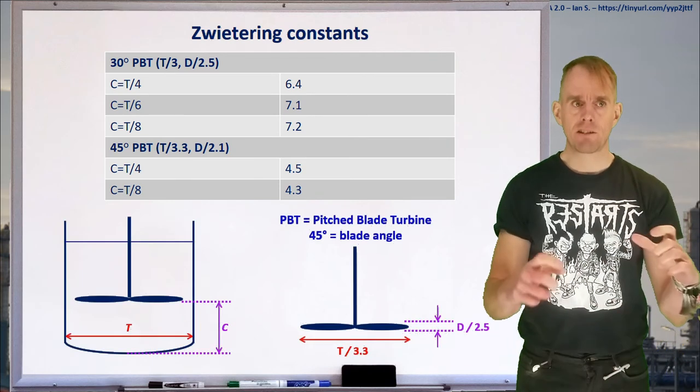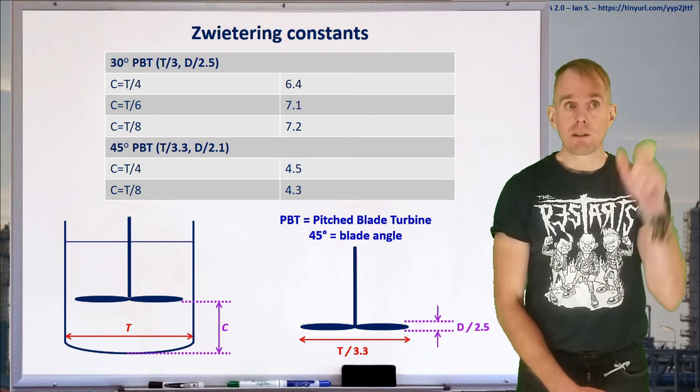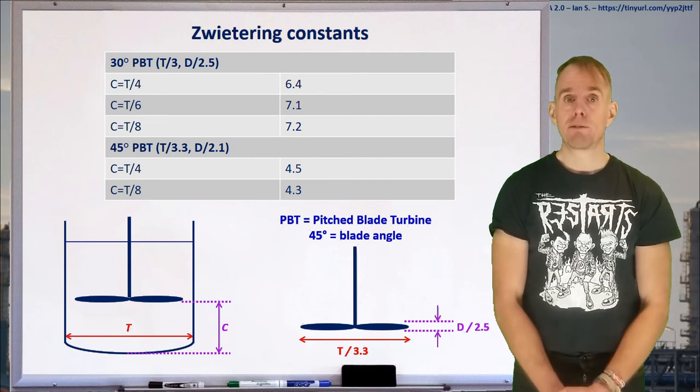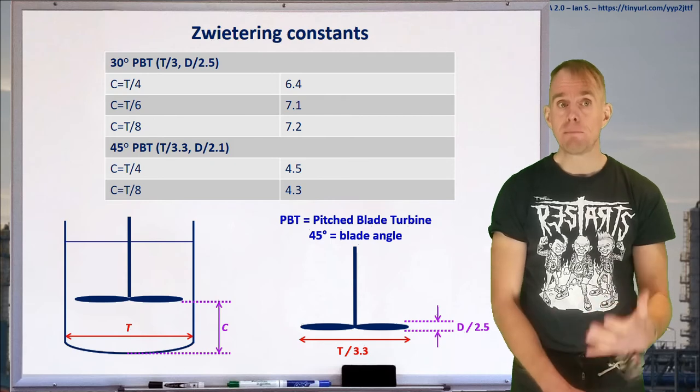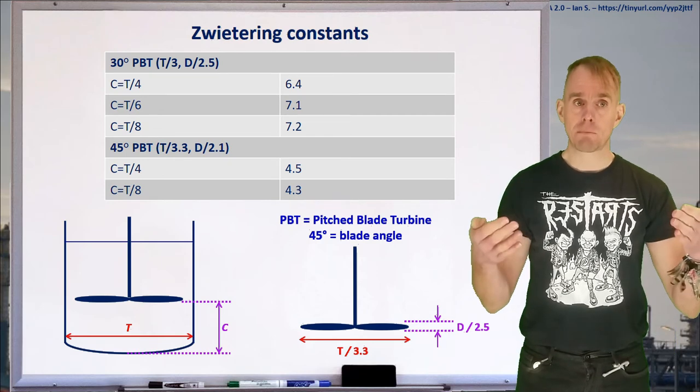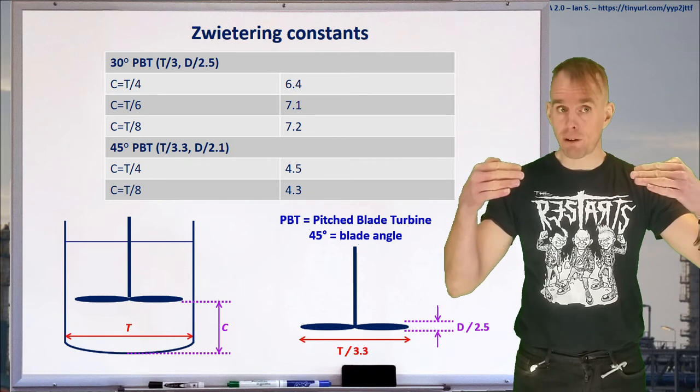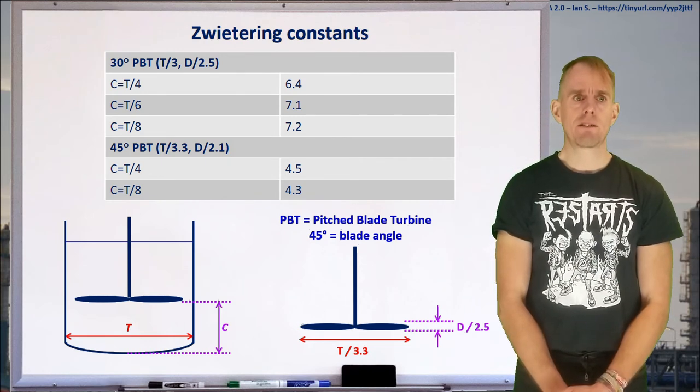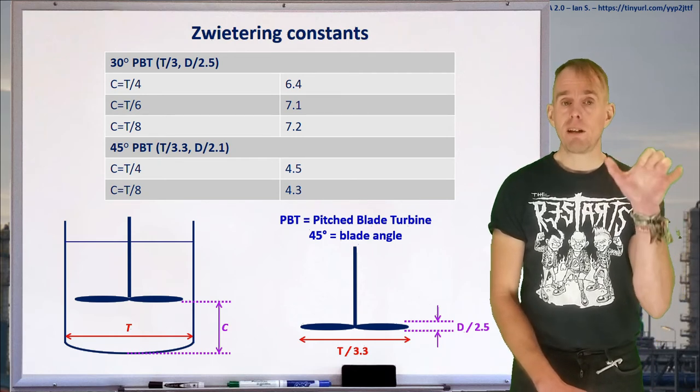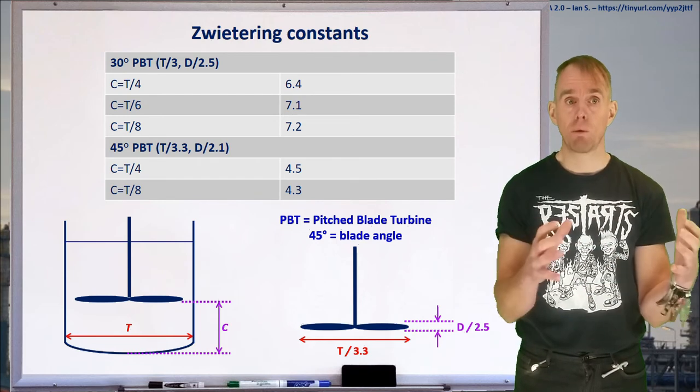Let's look at that second set of data, that is 45 degree PBT. A PBT is a pitched blade turbine. So these three-letter acronyms that follow the blade angle refers to what kind of impeller design you're dealing with. And PBT, our pitched blade turbine, is a very common one to use. And we can see in this table now we've got a pitched blade turbine with blades angled at 30 degrees to the horizontal and 45 degrees to the horizontal. OK, so let's look at T over 3.3. Well, T is our tank diameter. T over 3.3 is our impeller diameter. So it's 3.3 times smaller than our tank.